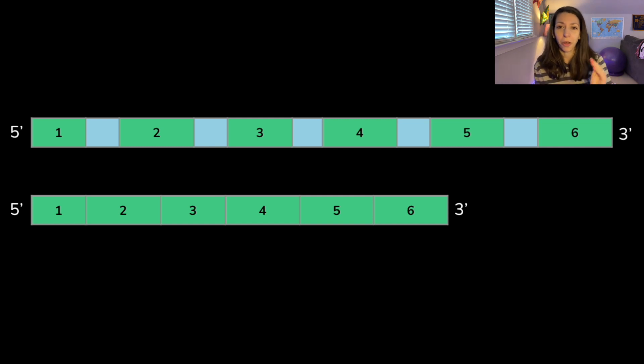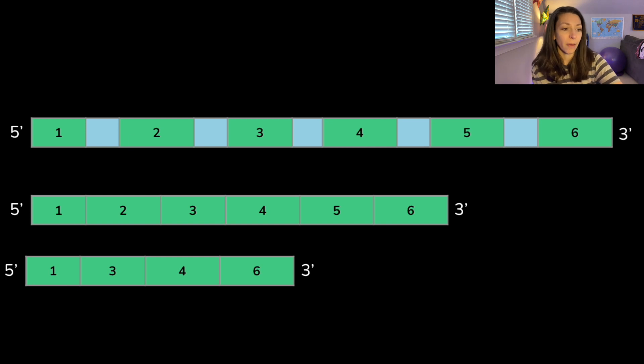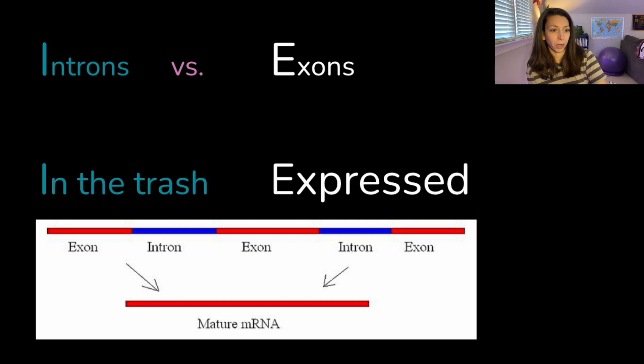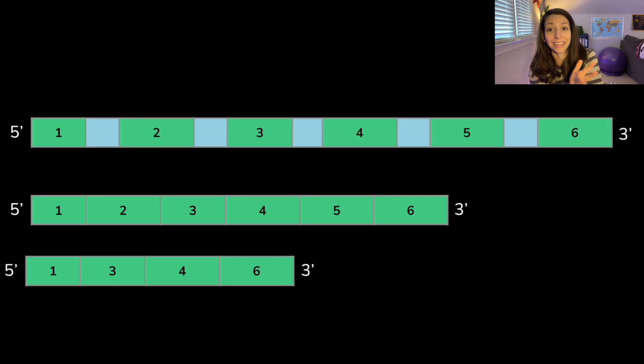Now we can also have what's called alternative splicing, where we only include some of those exons, or we can have exons appear in alternate formats from the same initial gene or the same initial mRNA. So for example, these two mRNA sections here could both come from the same initial template, but have different sections be cut out. And the result would be a different type of protein. The way to remember this and keep this straight is to think of the mnemonic introns go in the trash and exons are expressed. So in the trash for introns, we cut those out, exons are expressed.